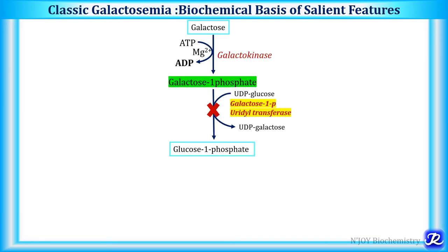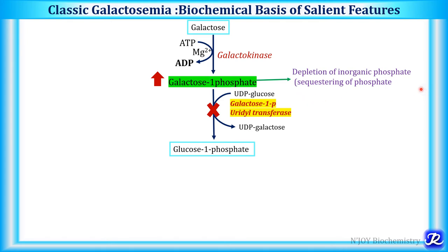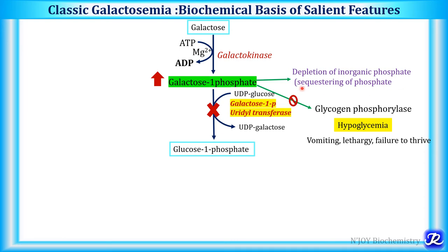In classic galactosemia, due to GALT deficiency, galactose 1-phosphate accumulates and more phosphate is utilized, leading to depletion of inorganic phosphate — called sequestering of phosphate. This phosphate unavailability, along with galactose 1-phosphate, inhibits glycogen phosphorylase, the enzyme responsible for glycogenolysis (conversion of glycogen to glucose). This results in hypoglycemia, along with vomiting, lethargy, and failure to thrive.